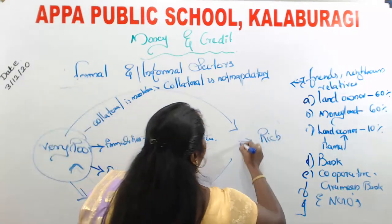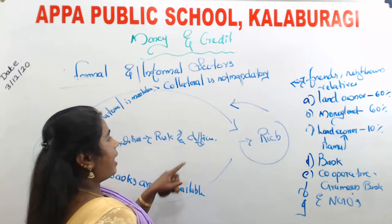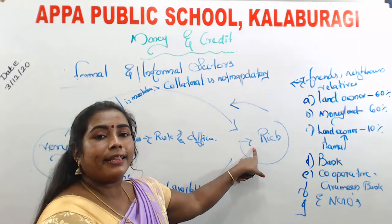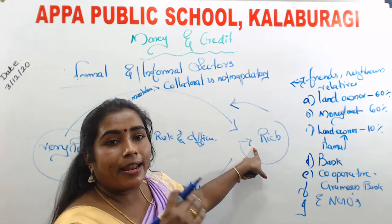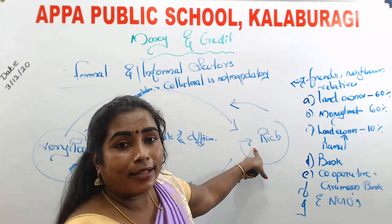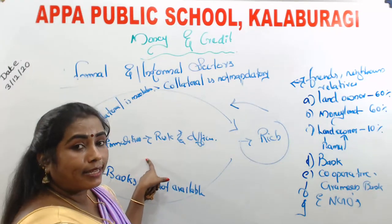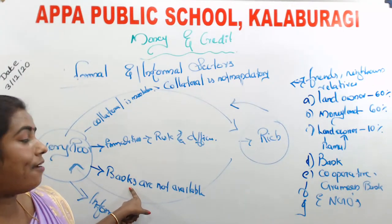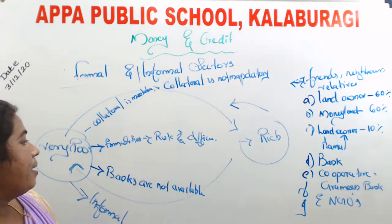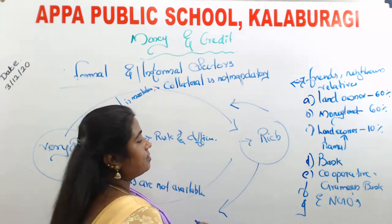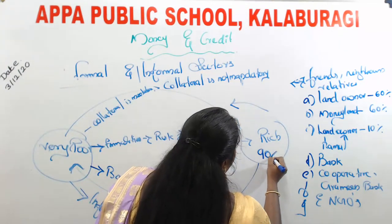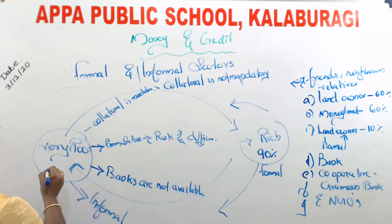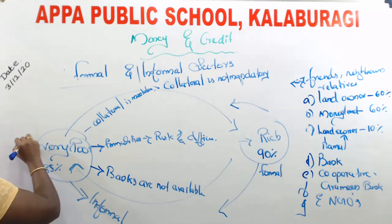Rich people do not face such problems. They have sufficient collateral — land and property certificates. Rich people mainly live in city regions, are educated, and know what bank schemes and conditions are available. Different bank branches are available in city regions. Rich people are more dependent on the formal sector. Approximately 90 percent of rich people depend on formal sectors such as banks, while 80 percent of poor people depend on informal sectors of credit.